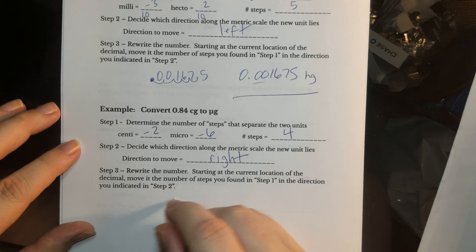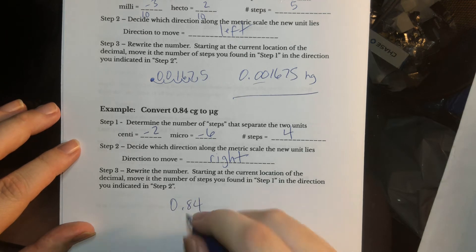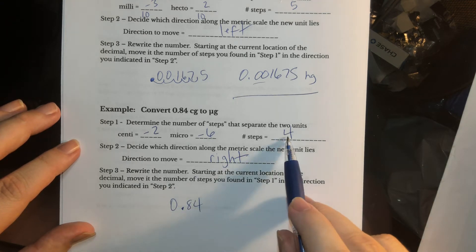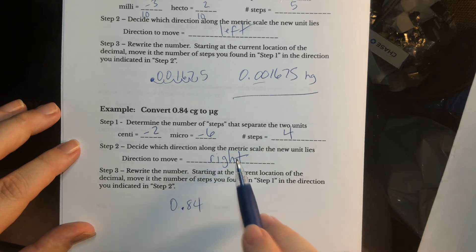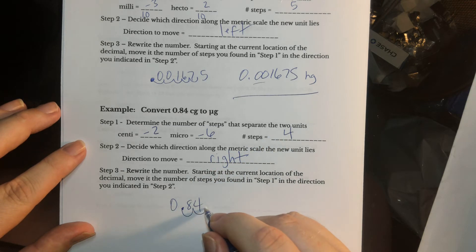All right, so now we're just going to put 0.84 down. Notice where the decimal is. Follow your instructions. Four steps to the right, one, two, three, and four. Put zeros there.